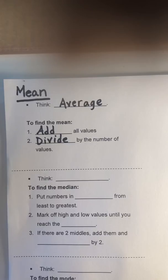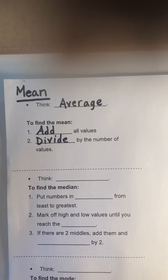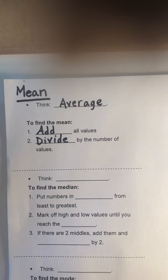Now, if you remember when we were doing the homework completion competition on the backboard, I was adding all of your percentages together to find who the winner was going to be for the most completed homework. That was finding the average — I would add up all of the percentages and then divide by the ten numbers that I added. Let me show you how this works.